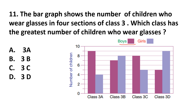Purple represents boys and blue represents girls. In class 3E, 9 boys and 4 girls wear glasses, that is 13. In class 3B, 7 boys and 8 girls, that is 15. In class 3C, 8 boys and 5 girls, that is 13. In class 3D, 9 girls and 5 boys, that is 14. So the greatest number of children wearing glasses is in class 3B. Answer is option B.